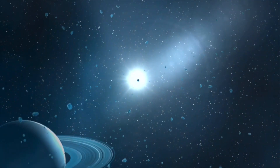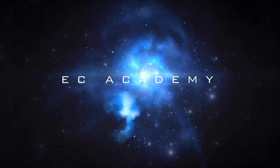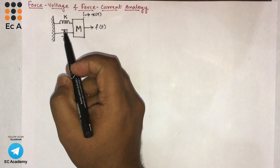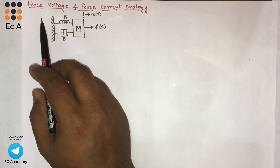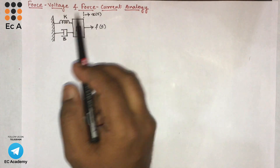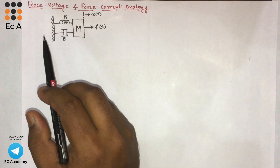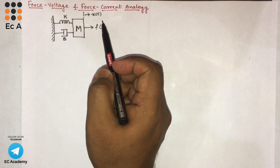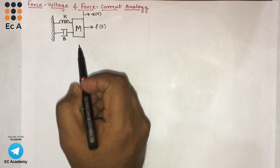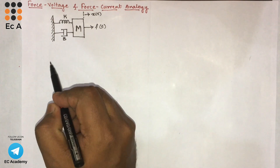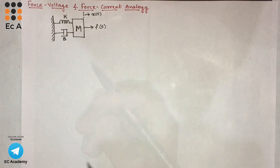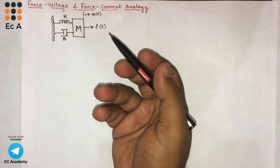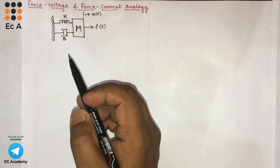Hello friends, welcome to EC Academy. In this lecture, let us understand a problem to draw a force voltage and force current analogy of a mechanical system. To write the force voltage and force current analogous circuit, we need to first write the mechanical network of a given mechanical system, then write the differential equations. From that differential equation, we can find the analogous circuit.